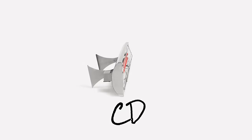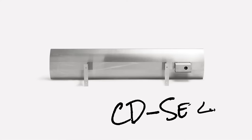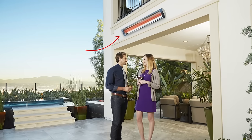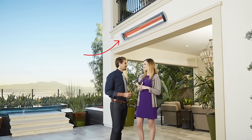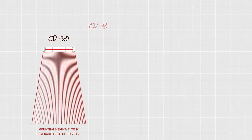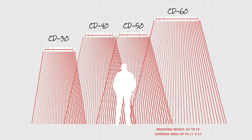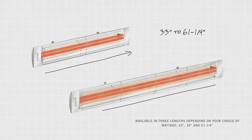Infratech's powerful Contemporary Series Dual Element Heaters feature the same design advantages as the Single Element C-Series but provide more concentrated heat for larger-scale applications where a minimal design aesthetic is desired. CD-Series Dual Element Heaters are available in a variety of wattages and can be mounted at heights ranging from 8 to 14 feet.